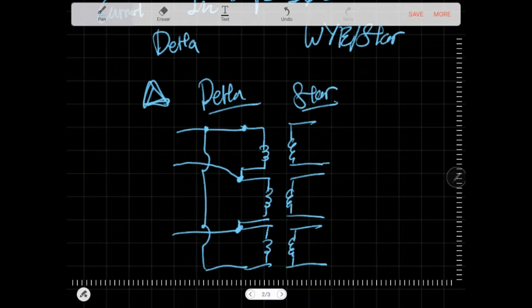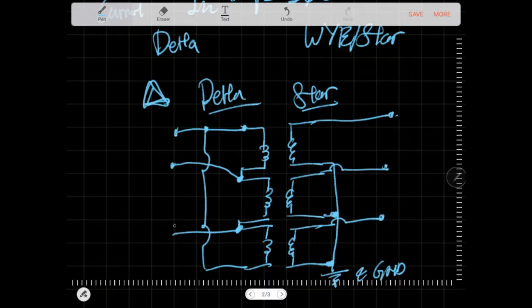It circulates in a way where it just goes in a loop. For a star, there's a common neutral point. There's a ground. It joins here. Every negative, you join down. That's your connection of star and that's your connection of delta. So you see the difference?